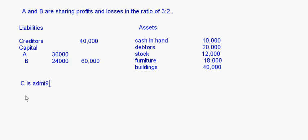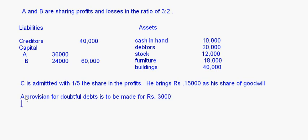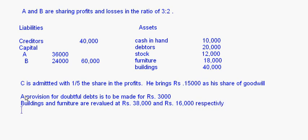C is admitted with a one-fifth share in the profits and brings rupees 15,000 as his capital. A provision for doubtful debts is to be made for rupees 3,000. Buildings and furniture are revalued at rupees 38,000 and rupees 16,000 respectively. Creditors were likely to claim only rupees 35,000. You are supposed to make the revaluation account.